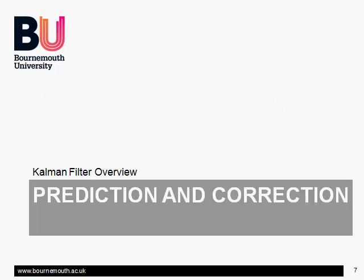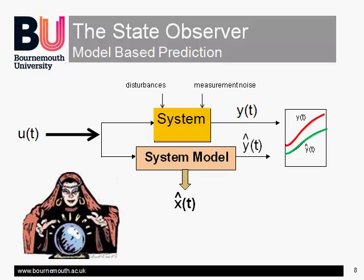Having got a model for our system, let's see how we can use it to predict what's happening. With a good model of our aircraft, say, we could simply apply the known system inputs to it, and it should track the behaviour of the physical system, both in its overall output response and in its internal states. But snags arise. One is that there will inevitably be some error in even the best model, which will cause it to diverge from the real system over time. The other snag is that the model must be started off at the same place, but we don't generally know the initial conditions the system starts from. And finally, the pilot or the weather may apply disturbances to the motion we don't know about.